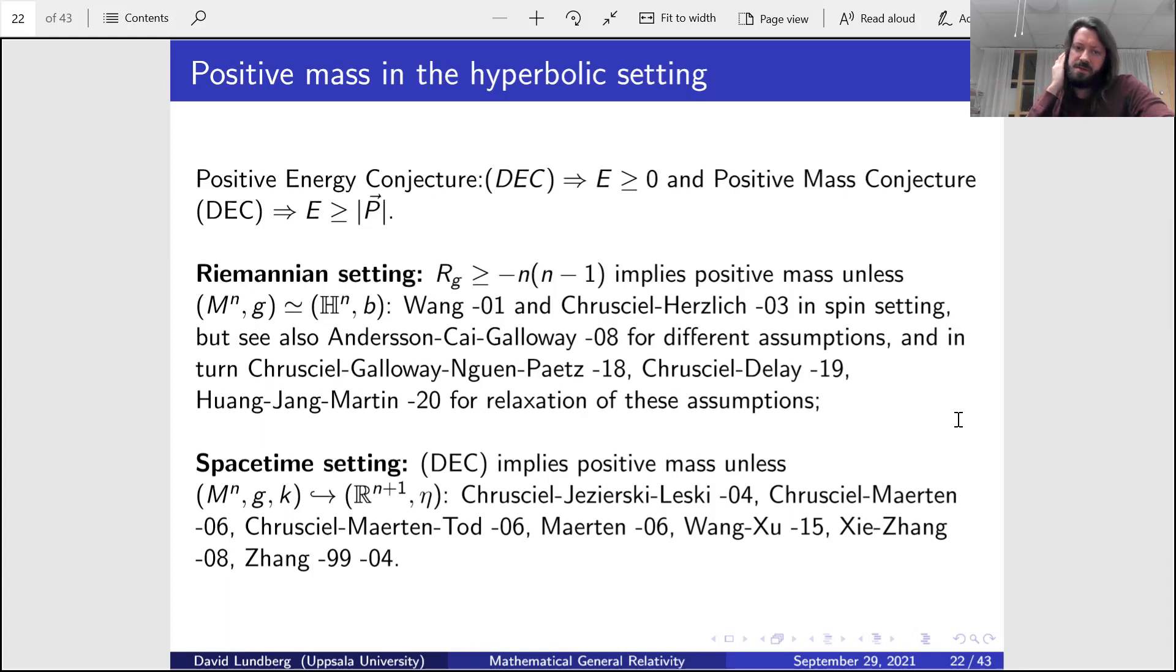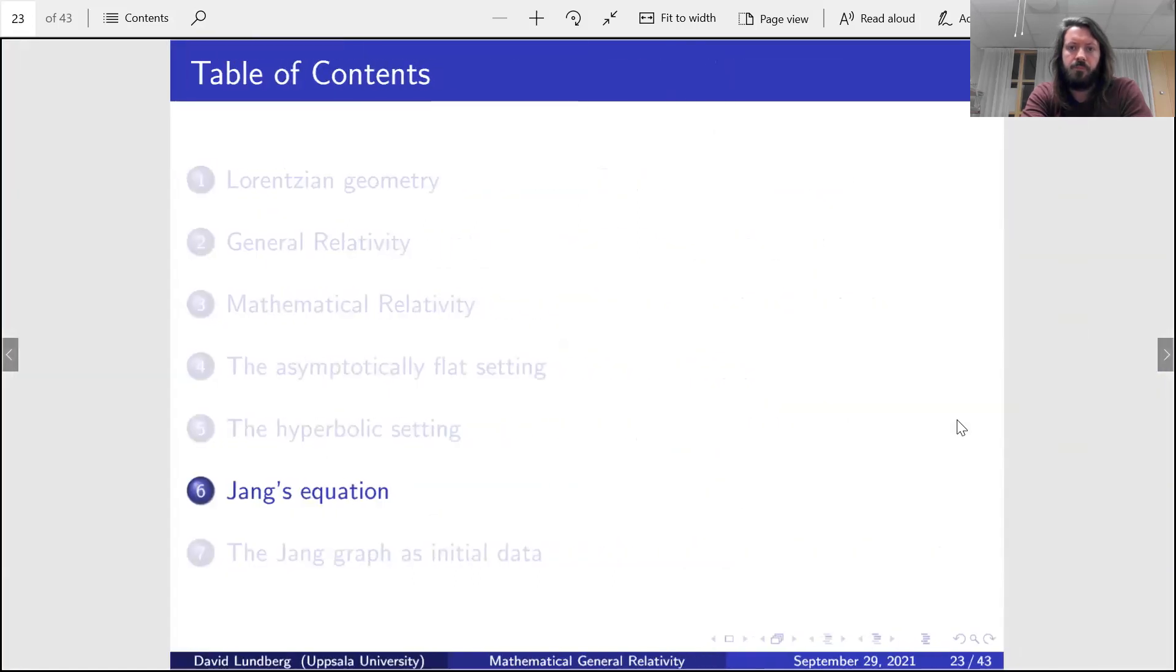The spacetime setting: the mass being positive means that we have the mass vector is a future-pointing causal. The mass vanishes precisely when we are embeddable isometrically into anti-de Sitter spacetime. And this was proven by Chrusciel-Jezierski-Leski, Chrusciel-Maerten 2006, Chrusciel-Maerten-Tod 2006, Maerten 2006, Wang 2015, Xie-Zhang 2008, Zhang 2004, and so on here under various assumptions. Okay, good. That is the end of that section.